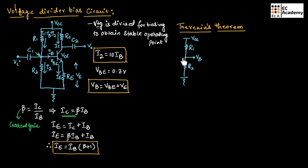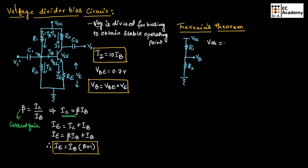In between we have the voltage Vb. In Thevenin's theorem, a complex circuit is replaced with a single voltage source and a resistor. Here we find the Thevenin's voltage between Vb and ground, and we write: Vth = (R2 / (R1 + R2)) × Vcc.